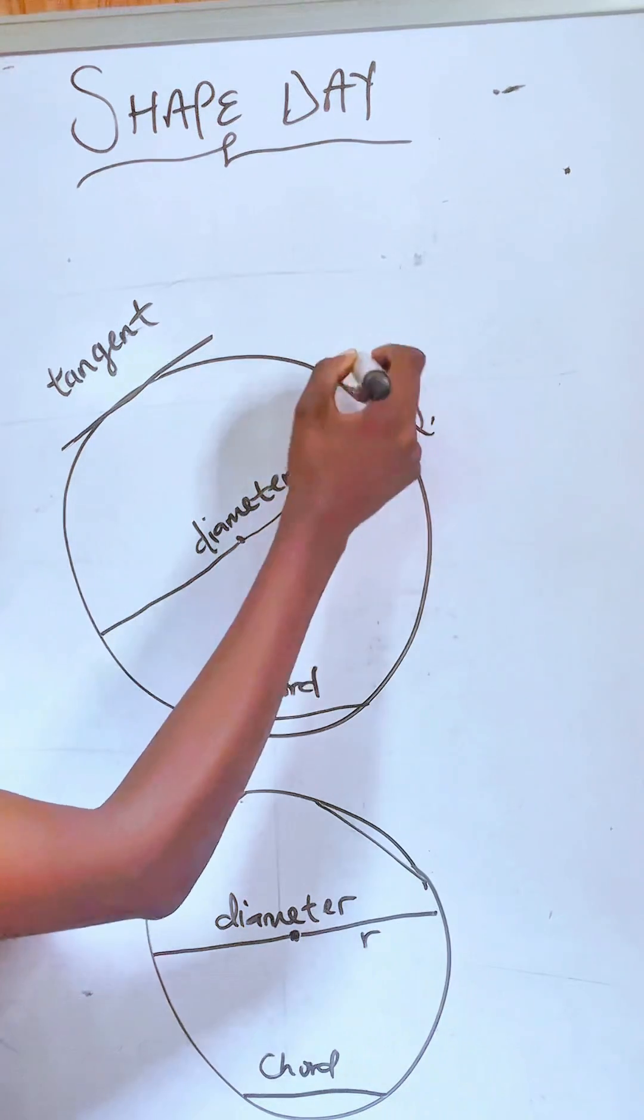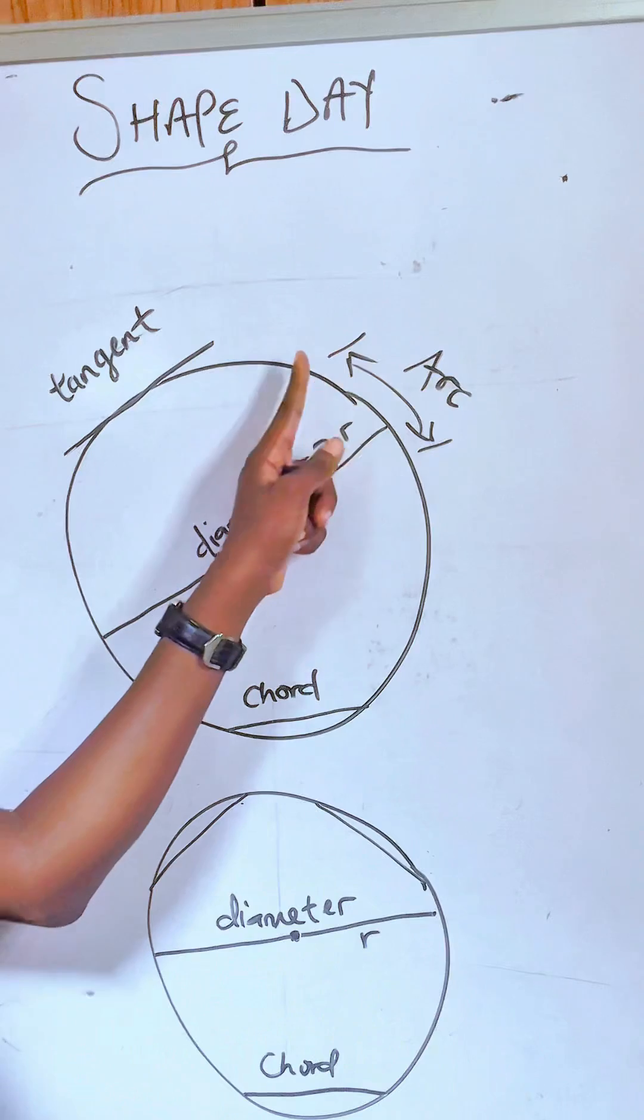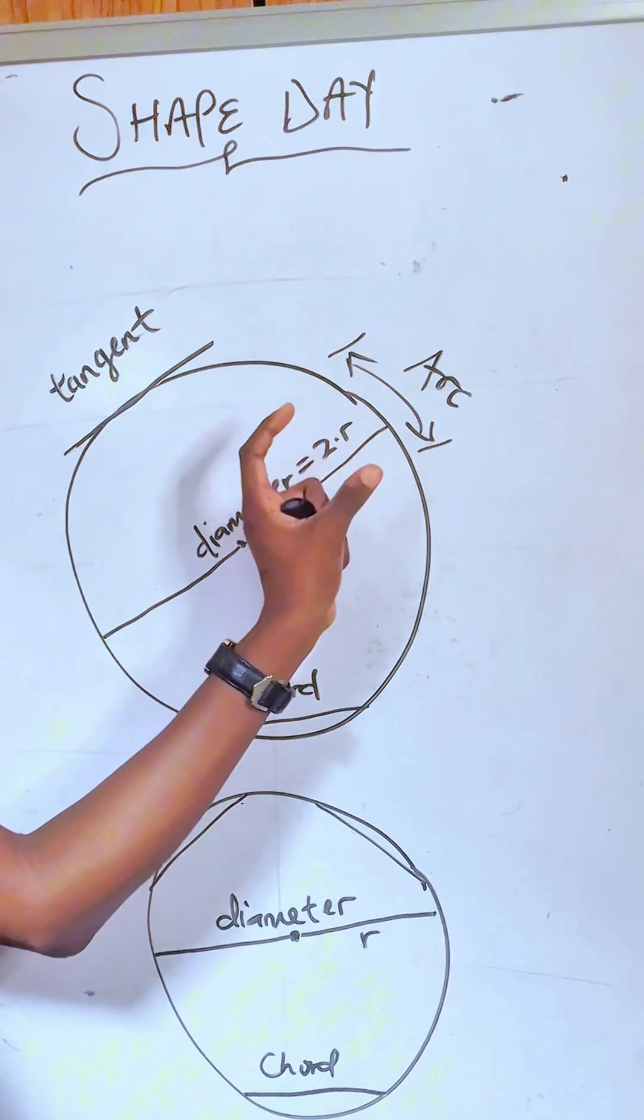It's called the arc. The arc of the circle is referred to as a curve, which is a part or a portion of its circumference.